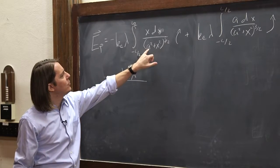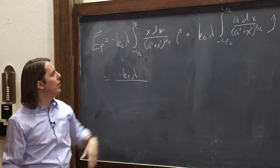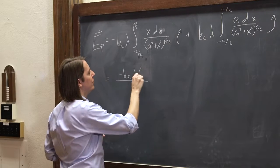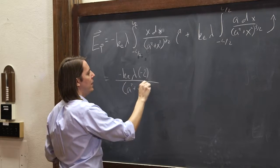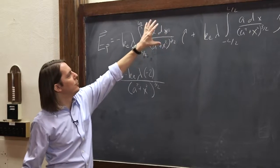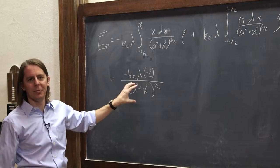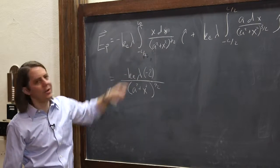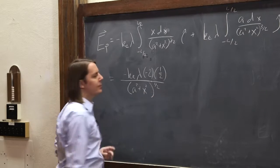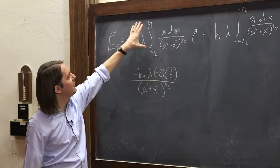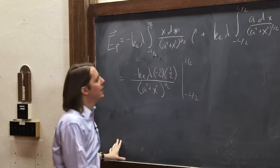We're integrating (a squared plus x squared) to the minus 3 halves. If we do that the normal way, that would give minus 1 half, so you'd divide by minus 1 half — which is like multiplying by minus 2 — and write (a squared plus x squared) to the 1 half, because minus 3 halves goes to minus 1 half. It's in the denominator. You also divide by the derivative with respect to x, which is 2x. So we divide x by 2x and get a half. That's the integral, evaluated from minus L over 2 to L over 2 — that's your i-hat component.